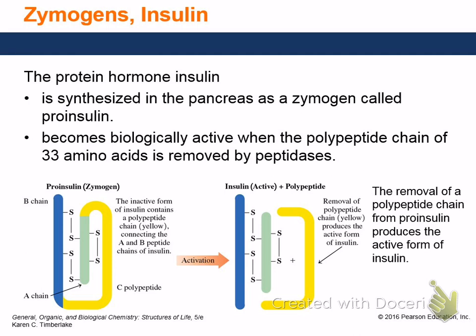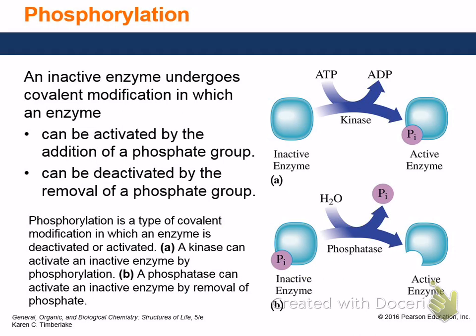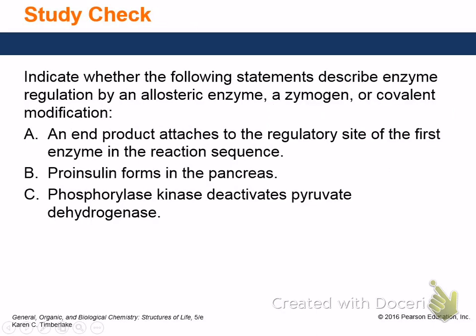Your body can make up enzymes, store them away, and when it needs them, activate them. That makes sense — rather than trying to make them all when you need them, just store some up. This also relates to phosphorylation — another form of covalent modification, specifically phosphorylation or dephosphorylation.